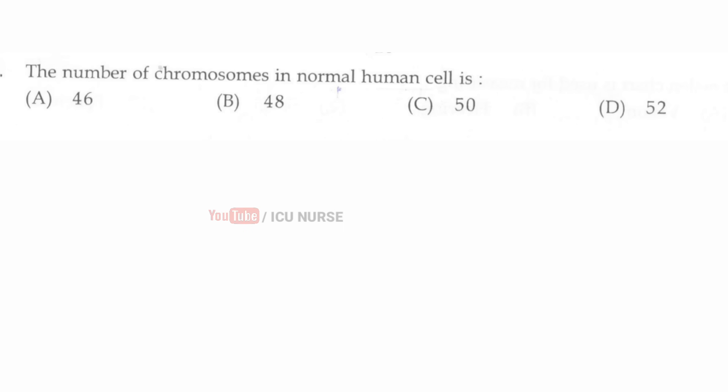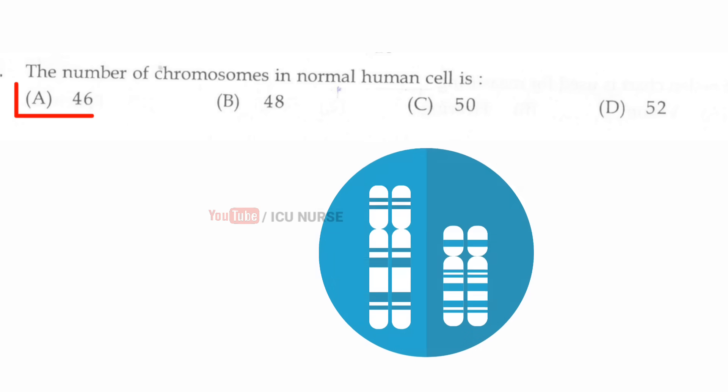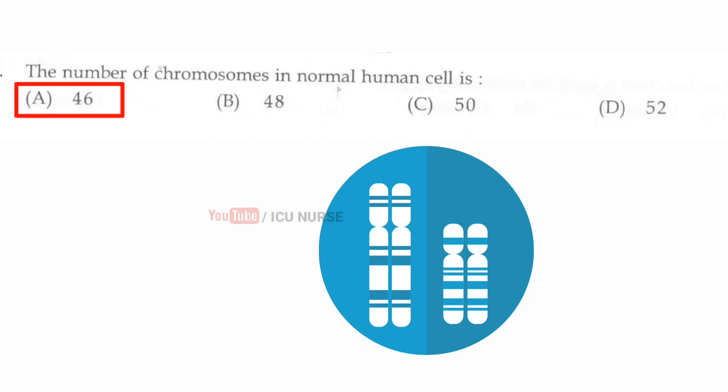The number of chromosomes in a normal human cell is? The correct answer is A, 46 chromosomes.